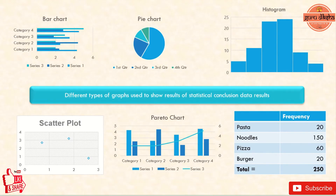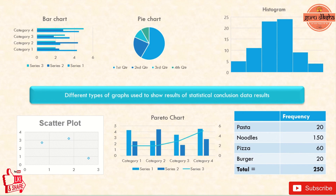Different types of graphs used to show results of statistical conclusions are: 1st is bar chart, 2nd is pie chart, 3rd is histogram, 4th is scatter plot, 5th is Pareto chart, and 6th is frequency. This frequency is mostly used in 10th class. For the bar chart, there is Series 1, Series 2 and Series 3 with different categories. The pie chart can be divided into different quarters — 1st, 2nd, 3rd and 4th quarter — representing sales. Histogram and scatter plot point out data points, and the Pareto chart includes both a bar chart and a line chart.